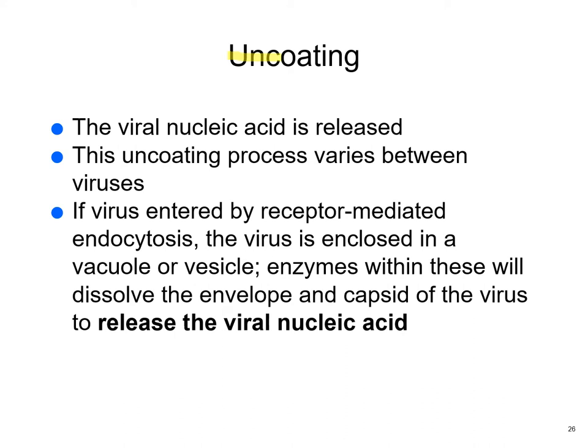Then it has to be uncoated — the viral nucleic acid is released, because nothing gets done otherwise. If entry was by endocytosis, the virus will be enclosed in a vesicle. Enzymes will dissolve the capsid — probably in an attempt to destroy the virus — but instead they release the viral nucleic acid into the cell.